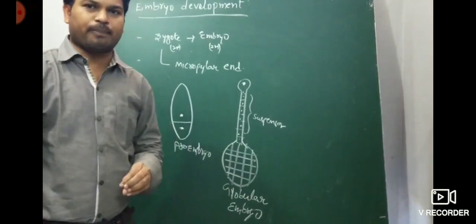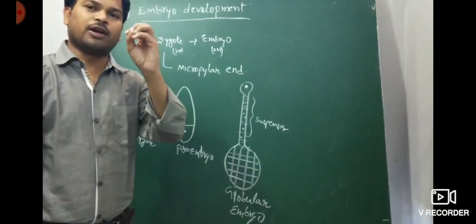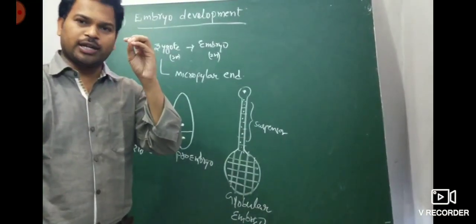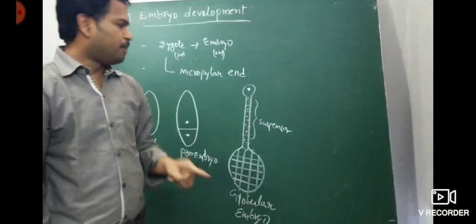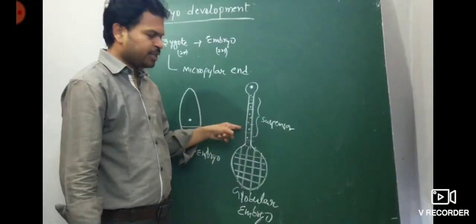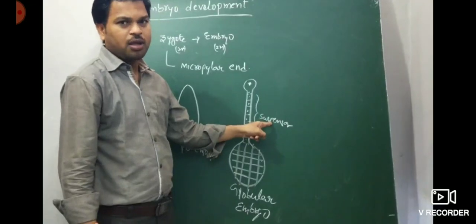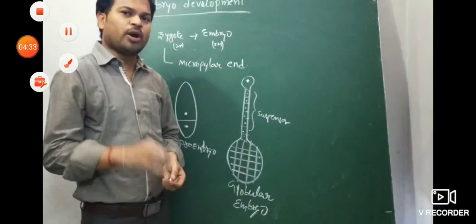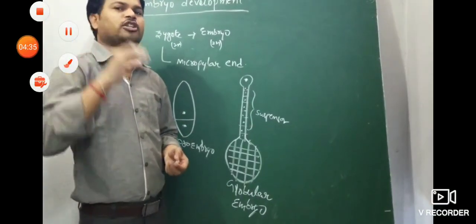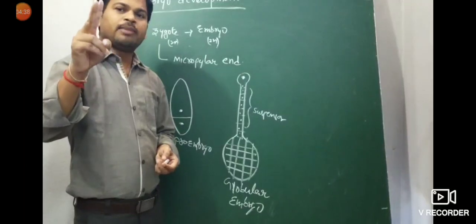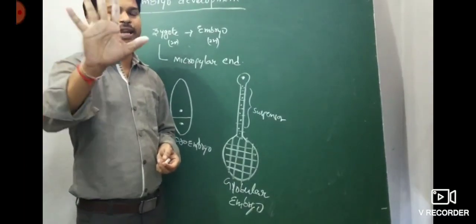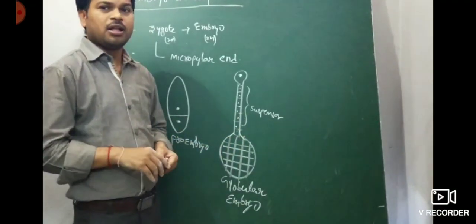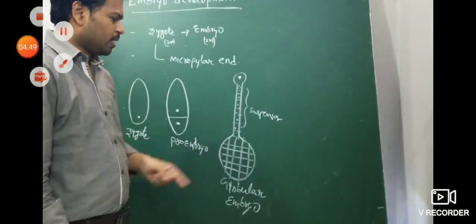The early stage of embryonic development is similar in both monocots and dicots. However, in dicots the suspensor has six to eight cells, whereas in monocots there is only one cell suspensor. This is an important point for identifying correct or incorrect statements in exam questions.